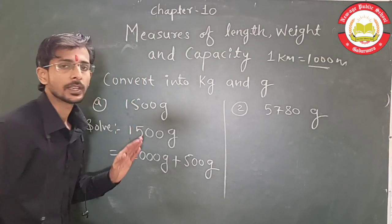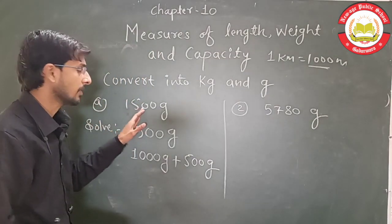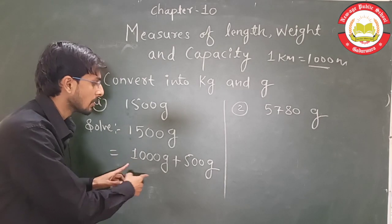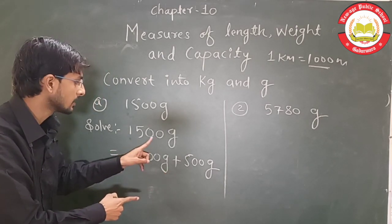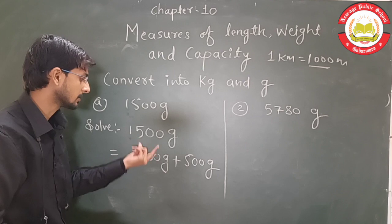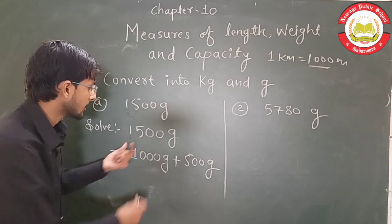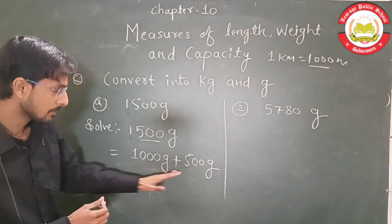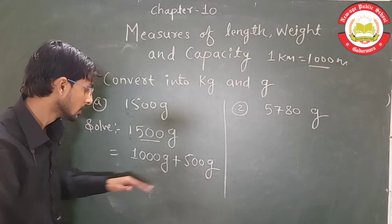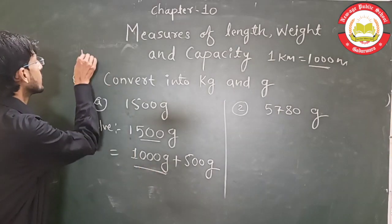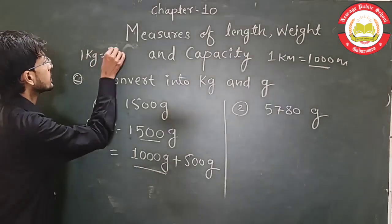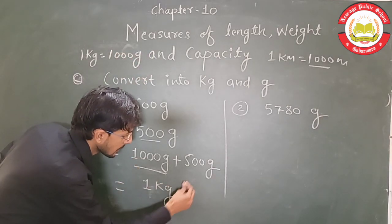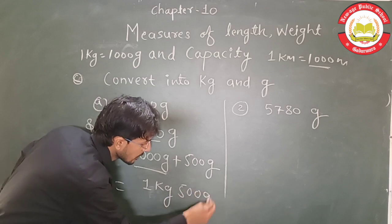Students, convert 1500 grams into kg and grams. First we distribute: 1000 grams plus 500 grams. We know that 1 kg equals 1000 grams, so 1000 grams becomes 1 kg, and the remaining 500 grams stays as 500 grams. So the answer is 1 kg 500 g.